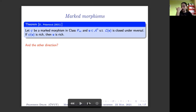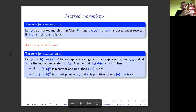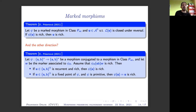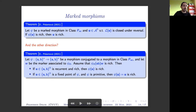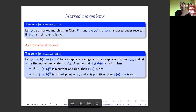What about the other direction? Unfortunately we don't have a general result, but we have several particular ones — for instance, on binary alphabets. If you consider a morphism on two letters that is in class P-rite and is marked, and if the special technical condition holds that the image of the word AB followed by the marker is rich, then: if we start with a recurrent rich word, its image is also rich. Moreover, if the morphism is primitive, then any fixed point — which coincides with its own image — is rich as well.